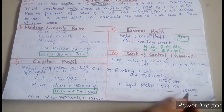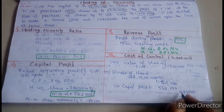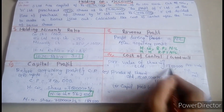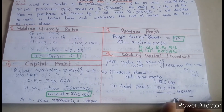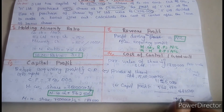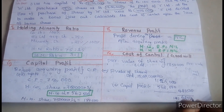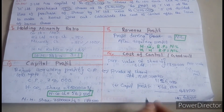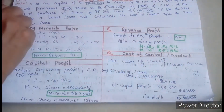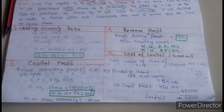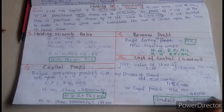The overall purchase value is 17,50,000, less 16,87,500, giving a cost of control of approximately 62,500. So the final answer works out to around 1,60,000 to 3,50,000 after adjustments for the bonus issue.